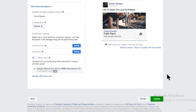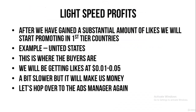You have all the social proof you need. After we have the social proof, we get Lightspeed Profits. This is our strategy: first we gain the huge social proof, and then we move on to the next step of the Lightspeed Method — the Lightspeed Profits part. In this part, after we've gained a substantial amount of likes, we will start promoting in first-tier countries.